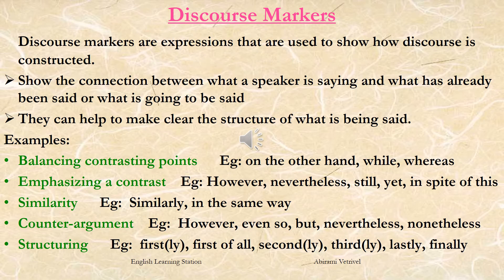Discourse markers or signpost words are expressions used to show how the discourse is constructed. They show the connection between what a speaker or writer is saying and what has already been said or is going to be said. They help make clear the structure of what is being said. Common types include discourse markers for balancing or contrasting points such as 'on the other hand,' 'on the one hand,' 'while,' 'whereas,' and others indicating emphasis, similarity, counter-argument, structuring, generalizing, and logical sequencing.